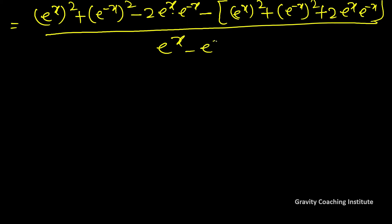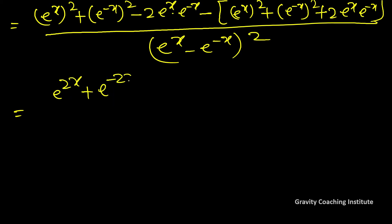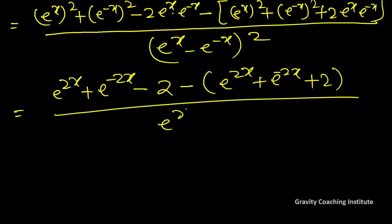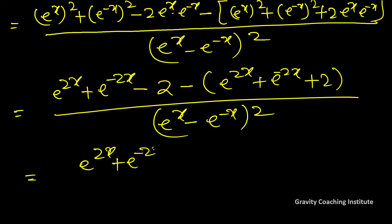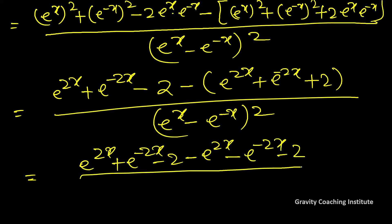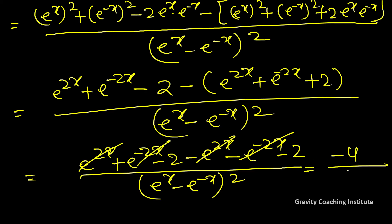Numerator में bracket open करने पर sign change होगा। (e²ˣ + e⁻²ˣ − 2) minus (e²ˣ + e⁻²ˣ + 2) = e²ˣ और e⁻²ˣ cancel हो जाते हैं, और −2 − 2 = −4। So the final answer is −4 / (eˣ − e⁻ˣ)² ।